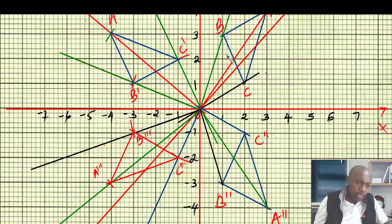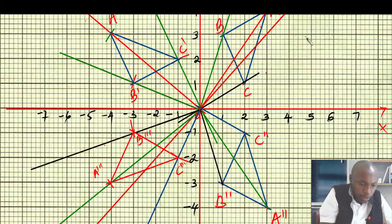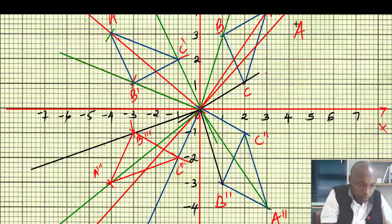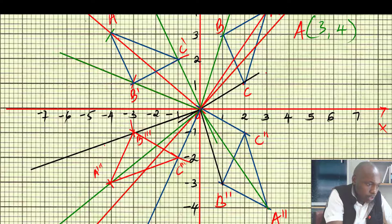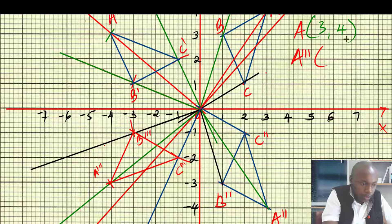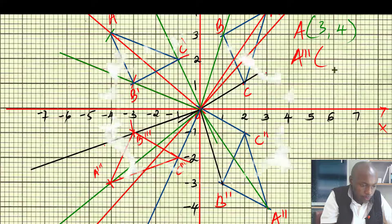When I take a point, let me take point A and A-triple-prime. Point A is (3, 4), and the image A-triple-prime is (-4, -3).